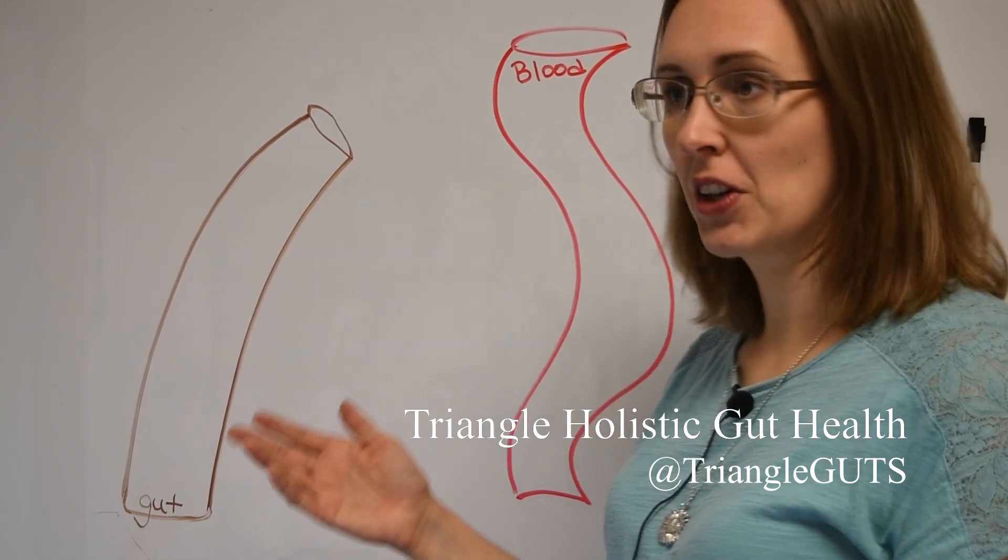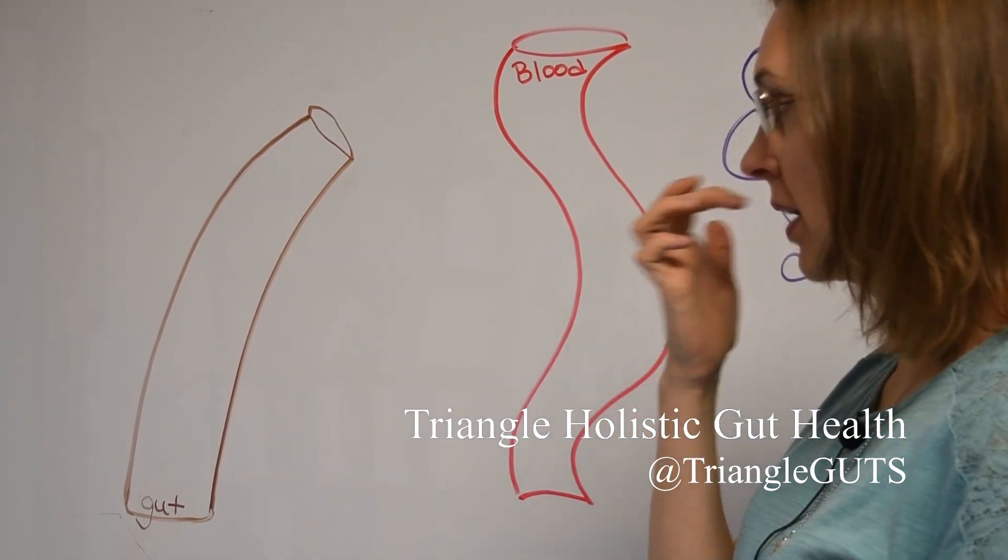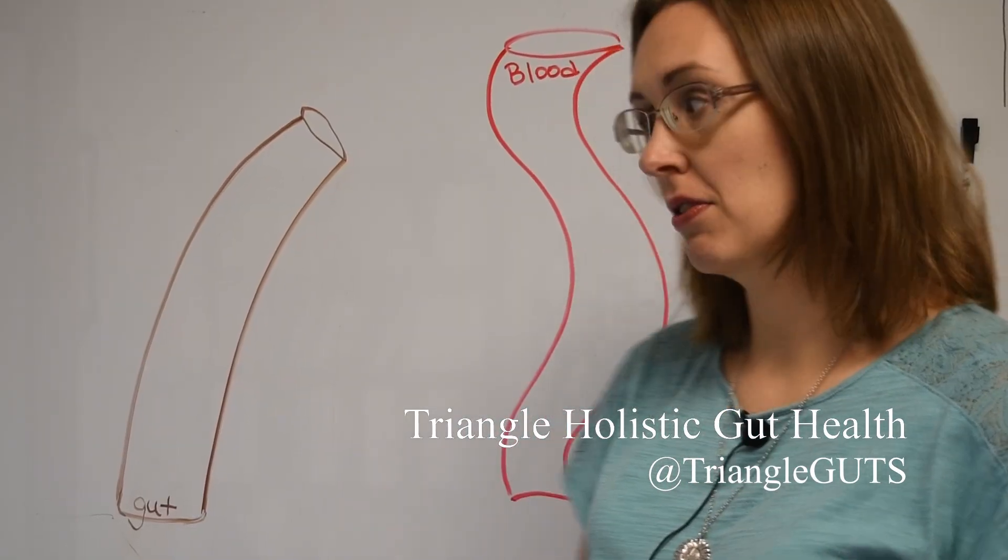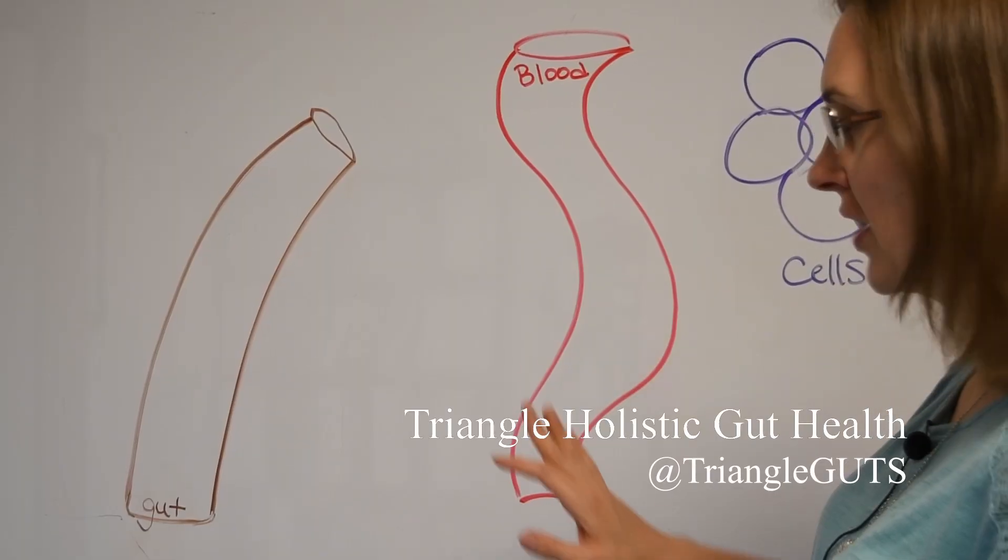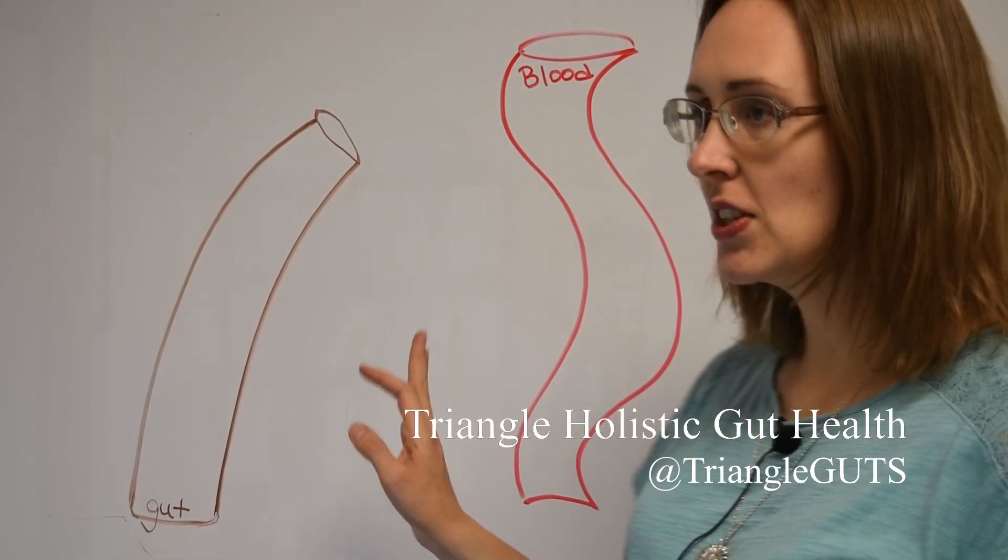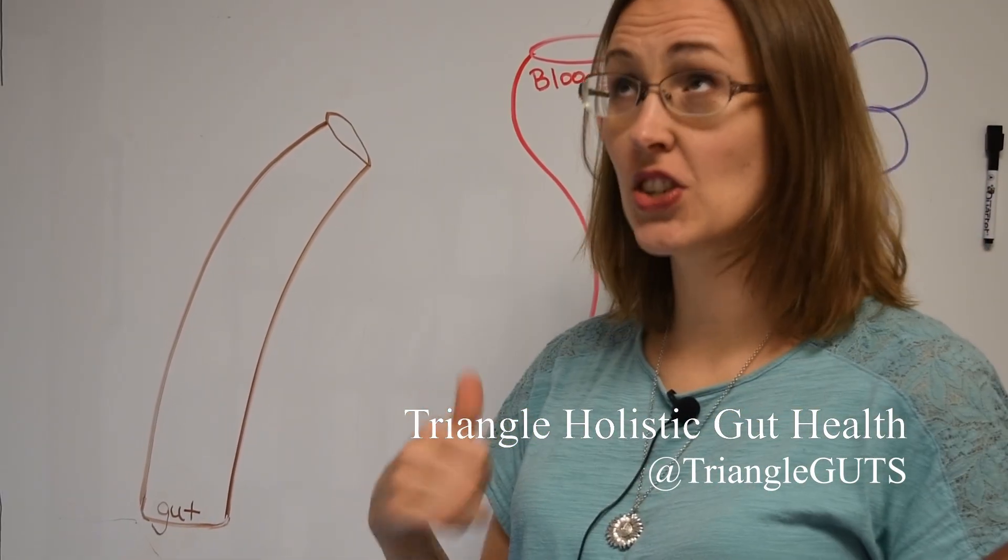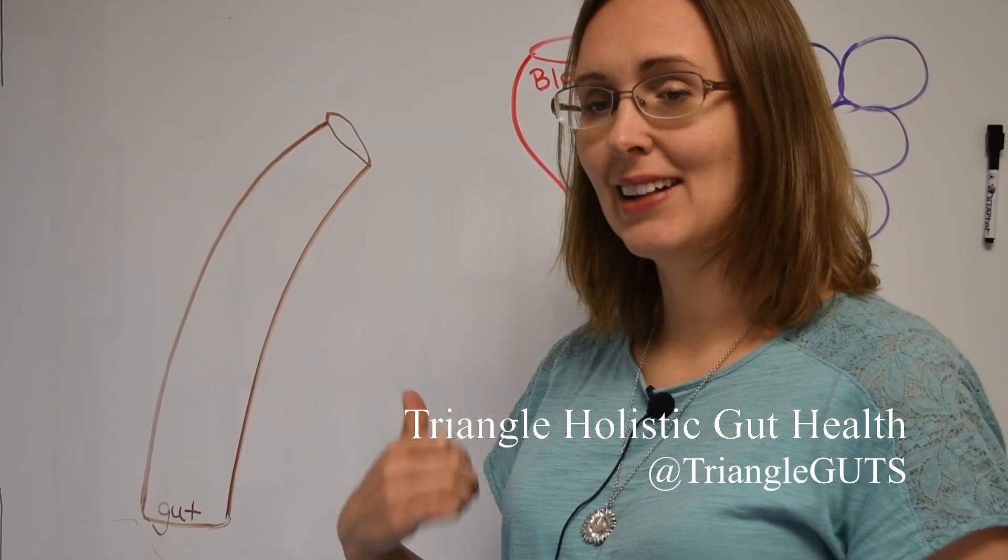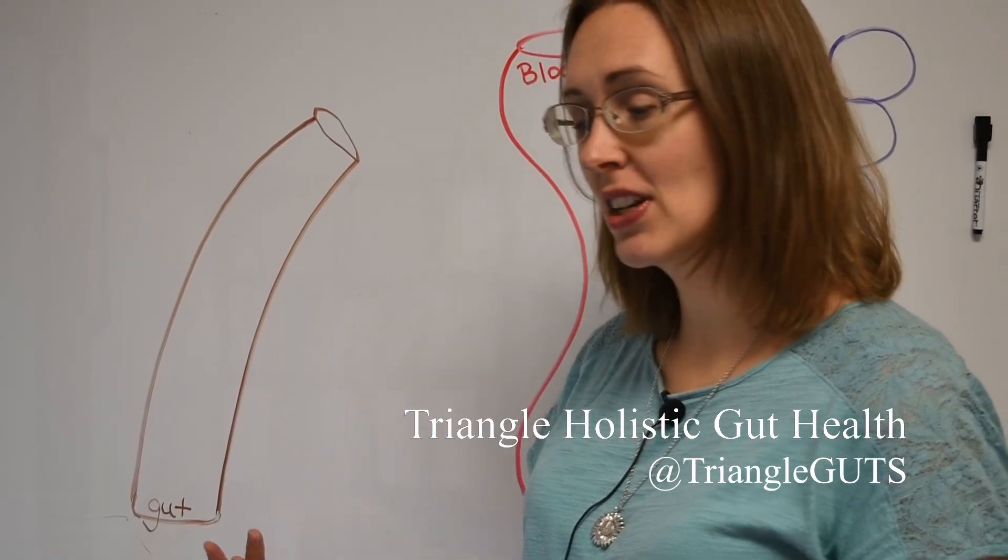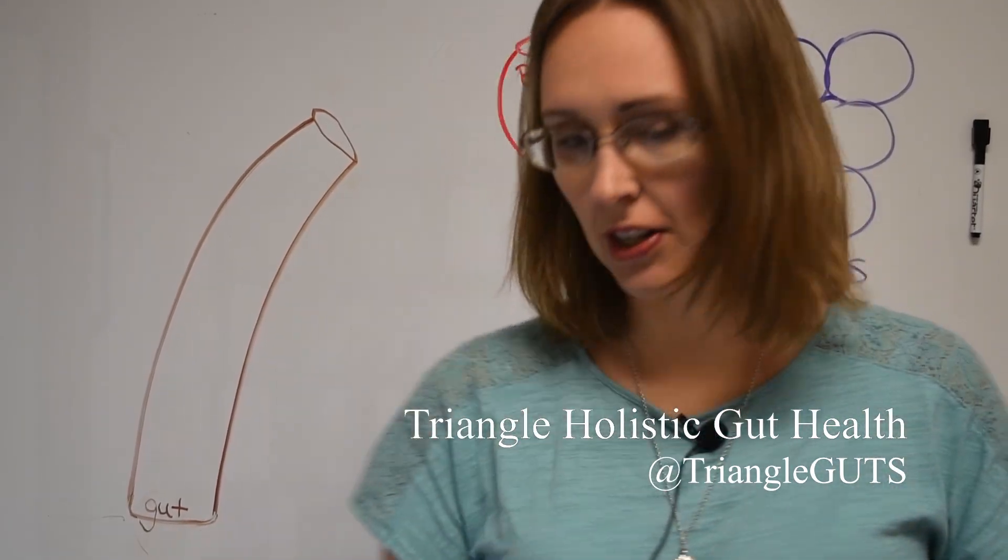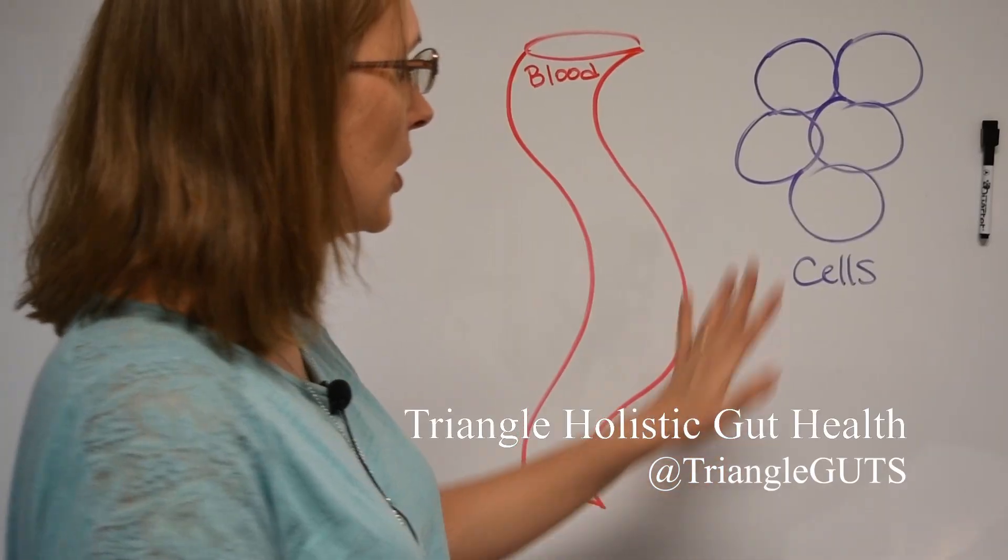It could be anywhere in the gut tube, but for the purposes of my channel we're probably talking about colon and small intestine for most of y'all. Next up we've got the bloodstream. This is a nice squiggly blood vessel I've drawn, and this is important because that's how stuff gets carted around your body and that's how your immune system largely gets carted around your body.